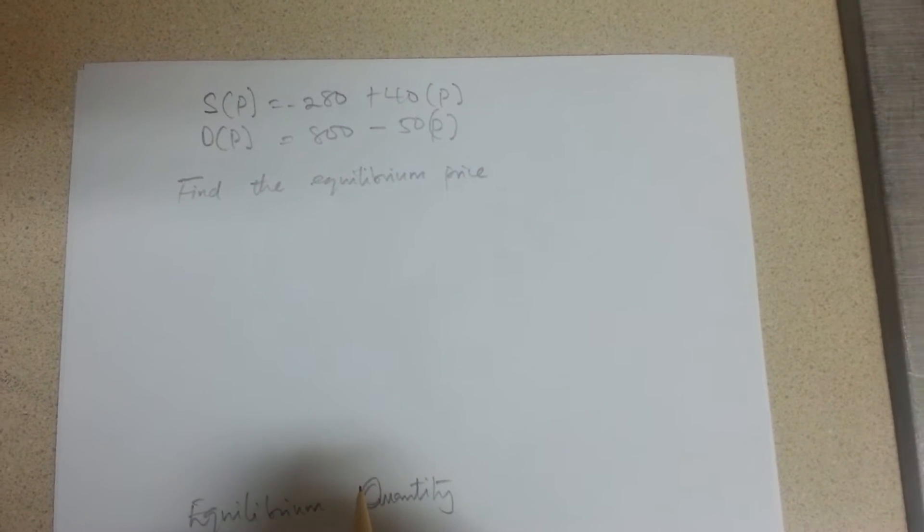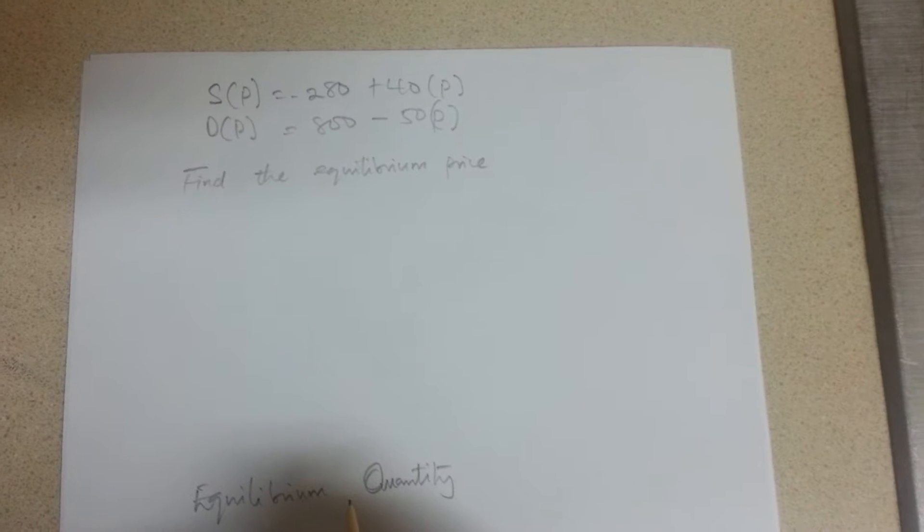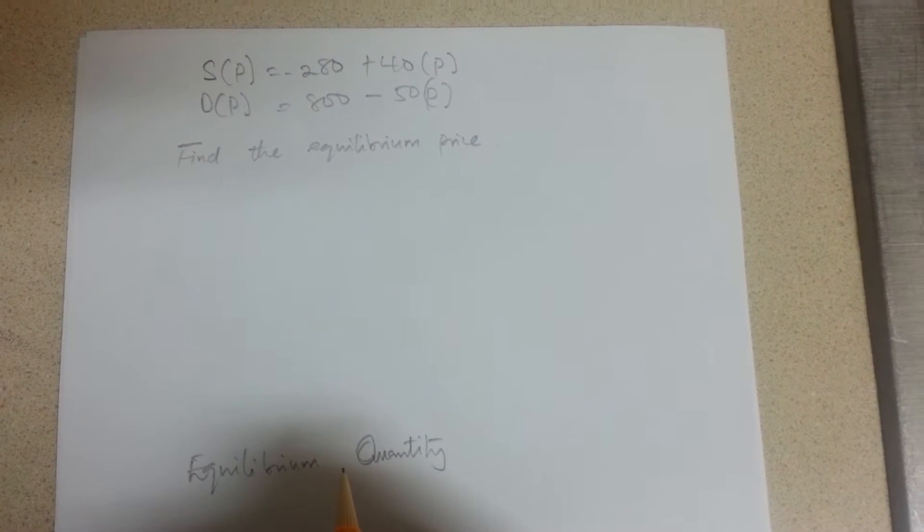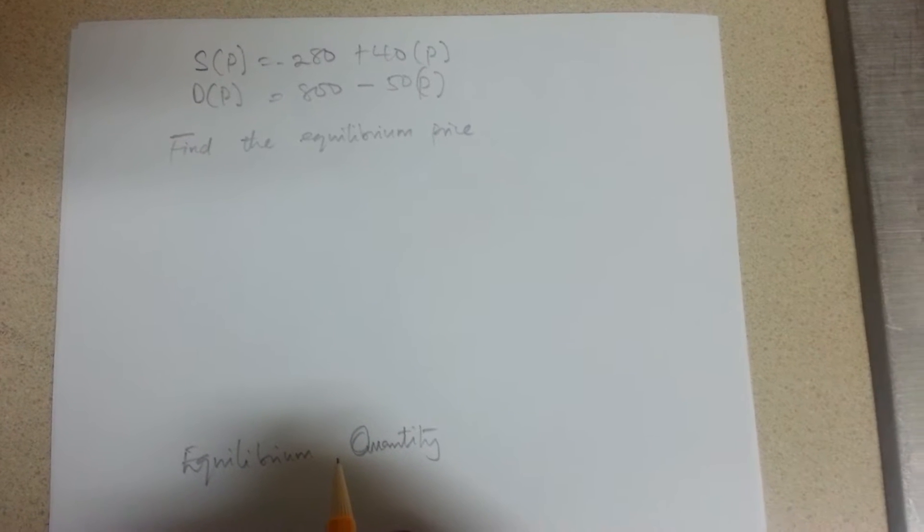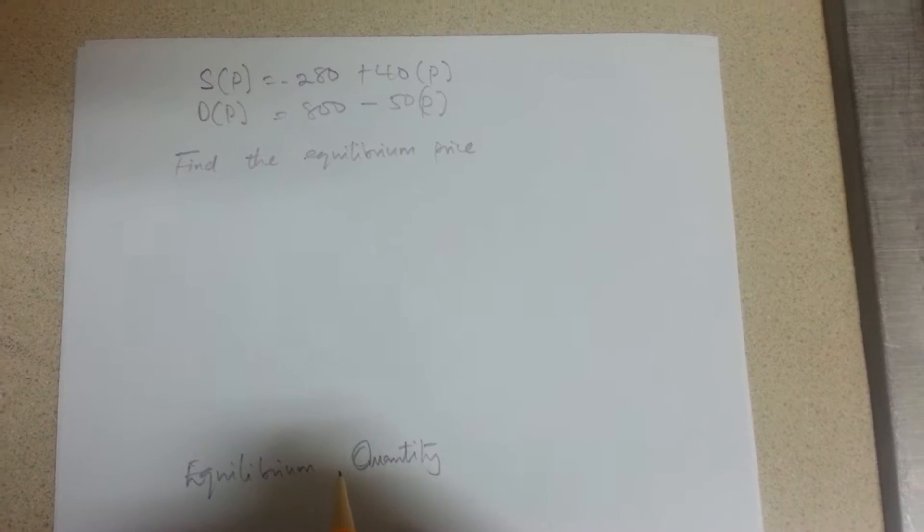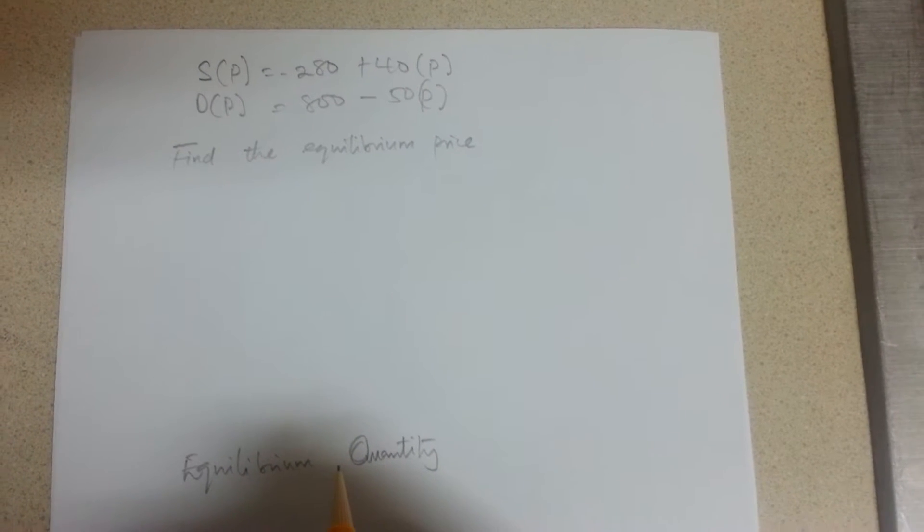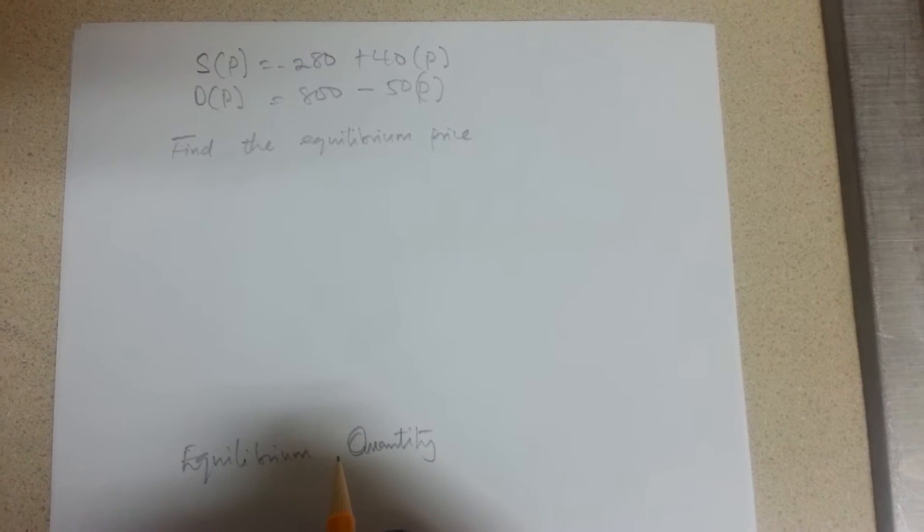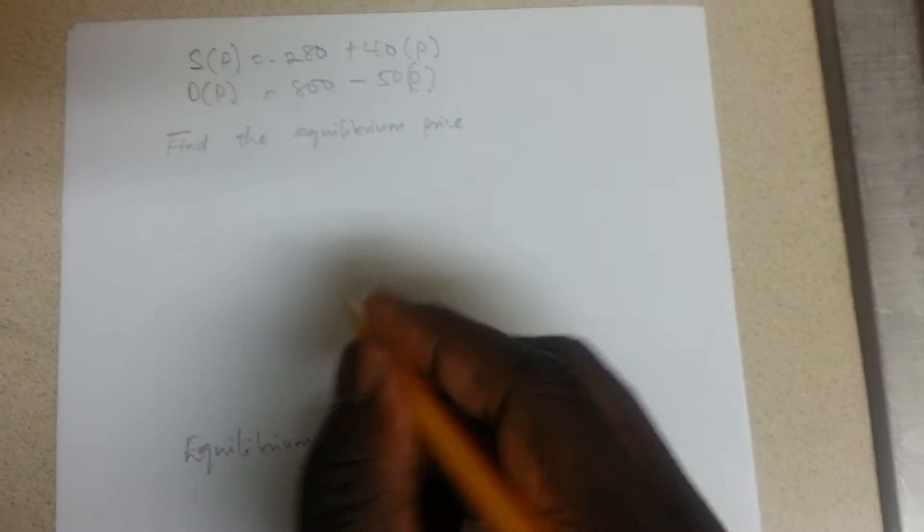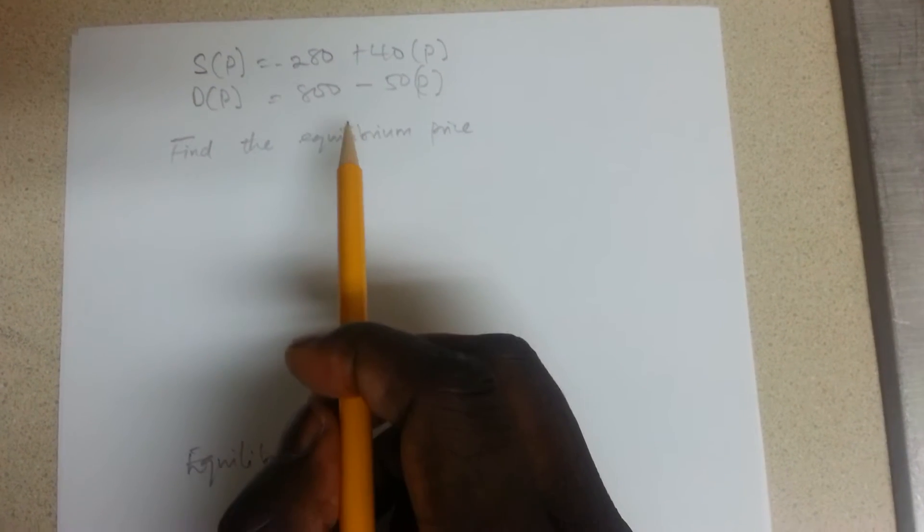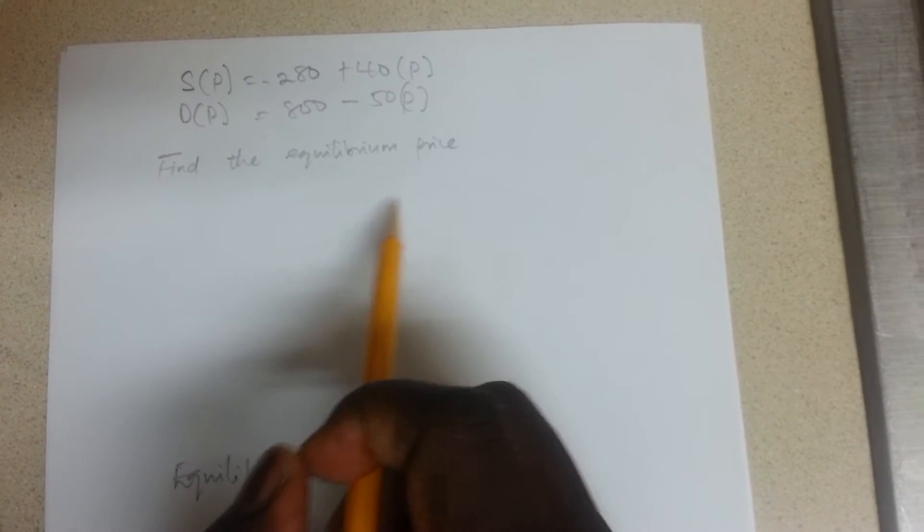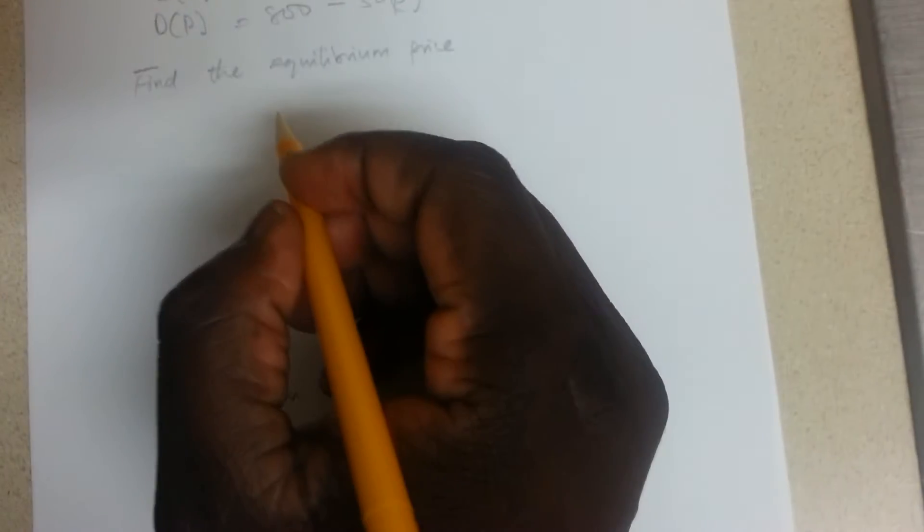Hi, my name is Joseph and I'm going to show you how to calculate equilibrium price and equilibrium quantity. Let's say we were given these two equations. To find the equilibrium price you're going to use this formula.